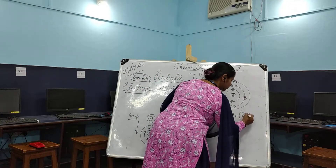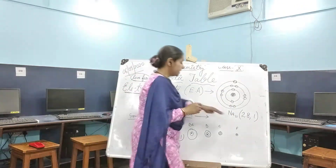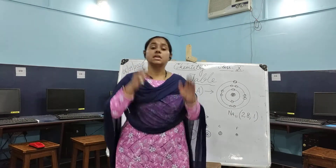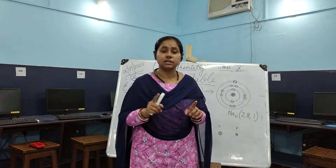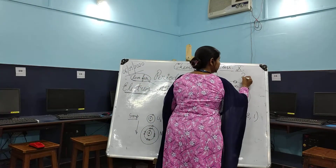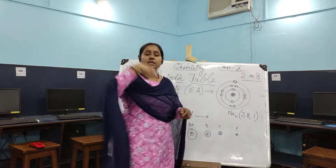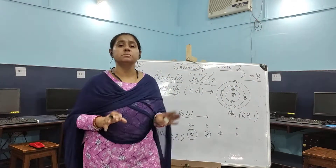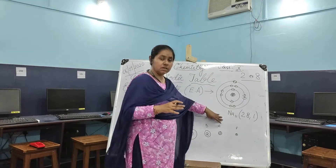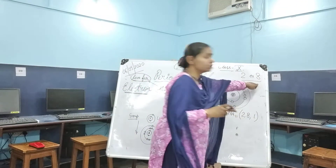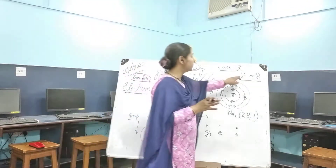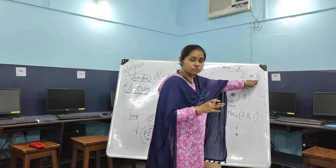The electronic configuration of sodium is 2,8,1. To attain a stable electronic configuration — as you have learned earlier — in order for an element to be stable, it should have either two electrons or eight electrons in its valence shell. This is the stability criteria.